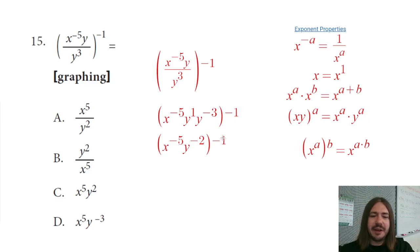But anyway, at any rate, we're going to basically distribute this negative one. We're going to raise each one of these factors to the negative first power, and since they already have a power on them or an exponent, we're going to multiply those exponents together. So negative five times negative one is going to be positive five, and negative one times negative two is going to be positive two, and there we go. We got our answer here. So our answer is choice C, and that's about it for number 15.